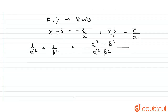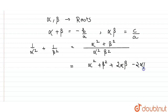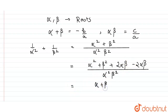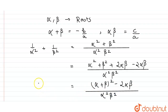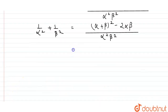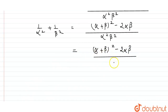Now, α² + β² equals (α + β)² - 2αβ. We are adding and subtracting this. So, 1/α² + 1/β² can be written as (α + β)² - 2αβ upon (αβ)².